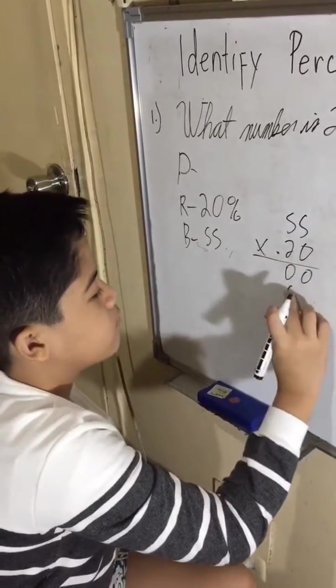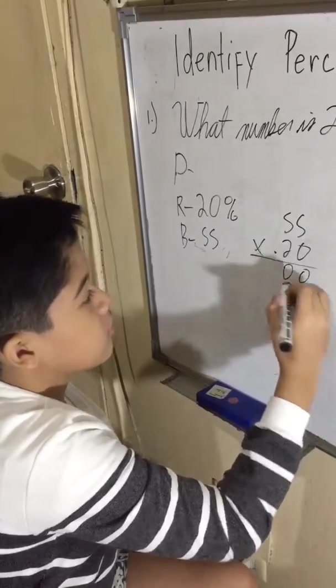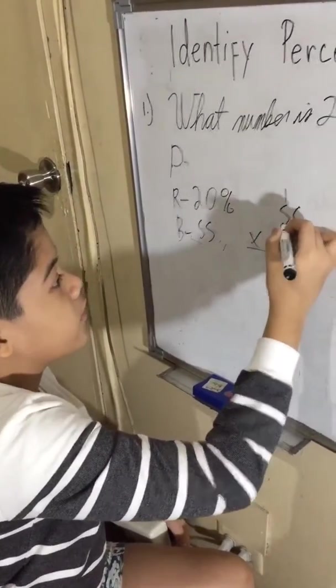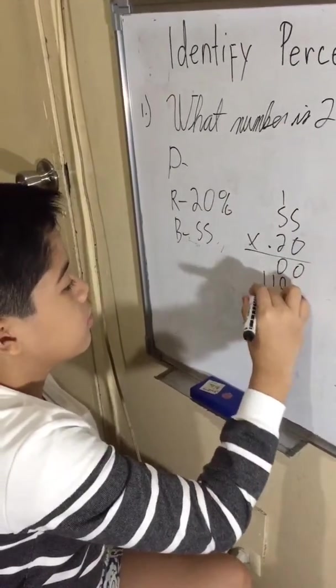Oops, I made it wrong. So it would be 10, 2 times 5, 10 plus 1, 11.